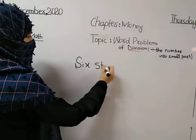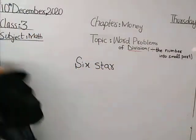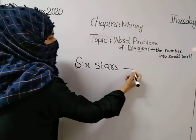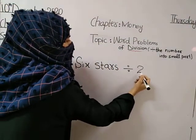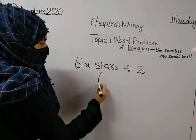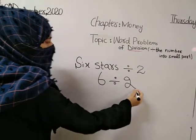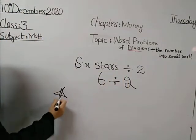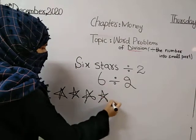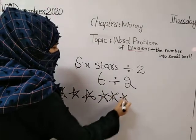Six stars divide two. What to do? Six stars into two parts. Six divided by two. Then I will now start the drawing: one, two, three, four, five and six.